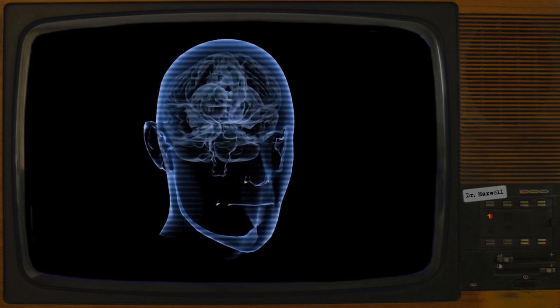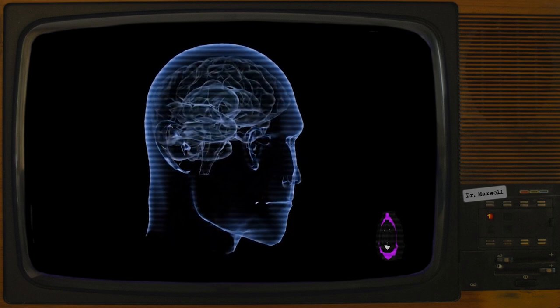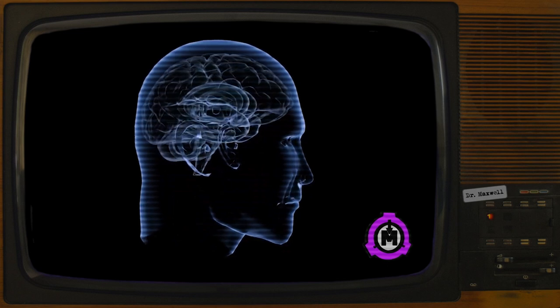Item Number SCP-868. Object Class: Euclid. Special Containment Procedures: